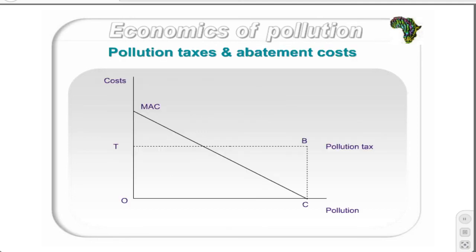The marginal abatement cost curve (MAC) represents the additional cost of abatement per additional unit of pollution reduced. Therefore, reducing pollution to OD units from OC would result in a cost of OT. If a company was producing OC units of pollution, they would have to pay a tax of T per unit of emissions, with the total cost of TBCO. They could then choose to abate their pollution, as the tax is larger than the cost of abatement. They would abate until emissions were OD units, where the MAC would equal T, and would thus pay control costs of ADC.